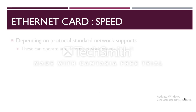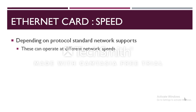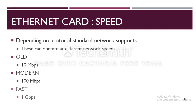Ethernet cards may operate at different network speeds depending on the protocol standard they support. All Ethernet cards were originally capable only of 10 Mbps maximum speed. Modern Ethernet adapters can support speeds of up to 100 Mbps. Fast Ethernet standards are also available now that offer speeds up to 1 Gigabit per second — these are known as Gigabit Ethernet.